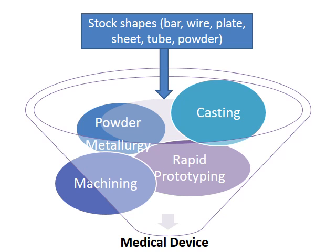As I said, the stock shapes arrive and there are a number of different methods of making a metal medical device. The few that I'm going to talk about in this course: casting, machining and various different types of machining — by no means an exhaustive list, but I'll try and cover a few — rapid prototyping, and powder metallurgy.